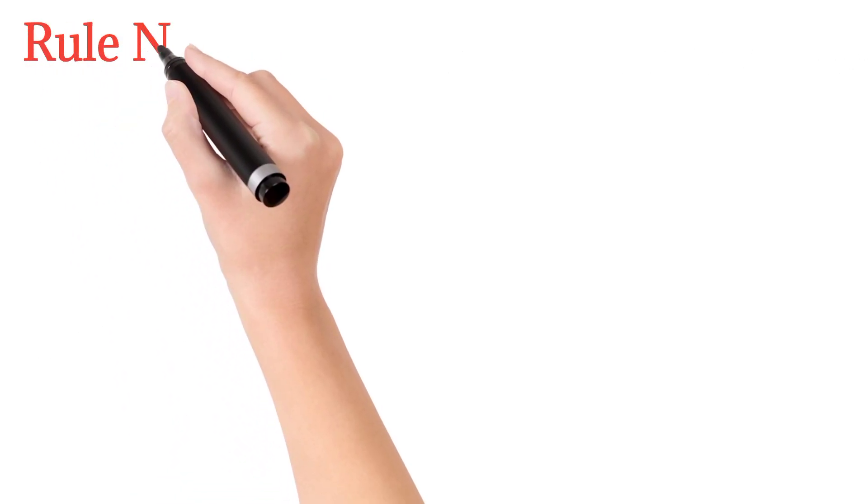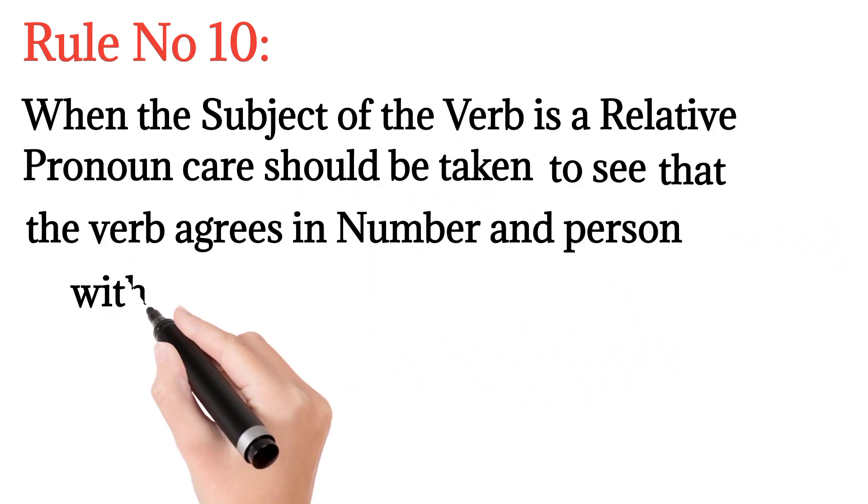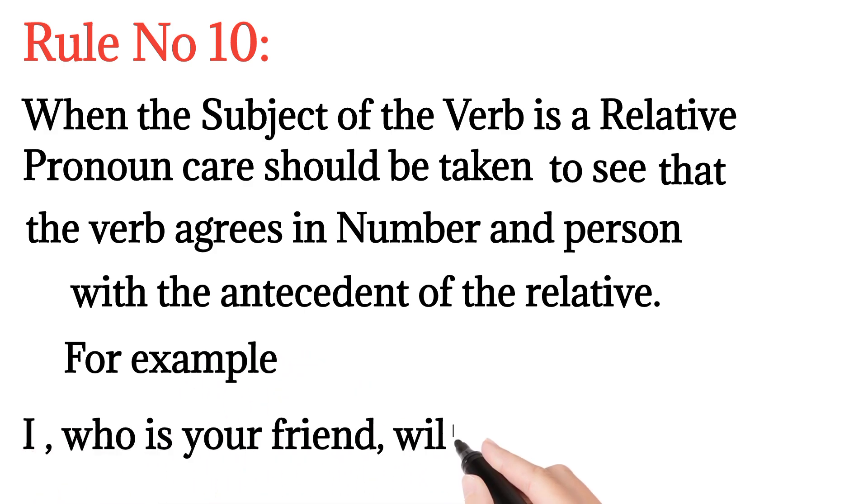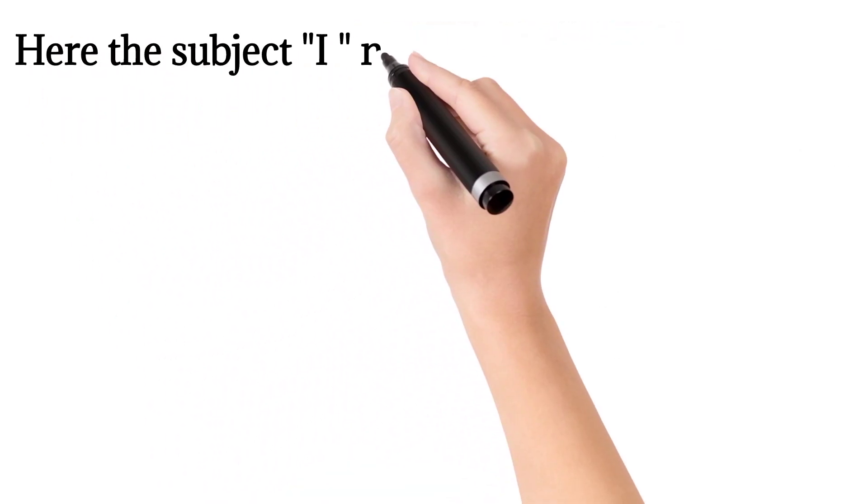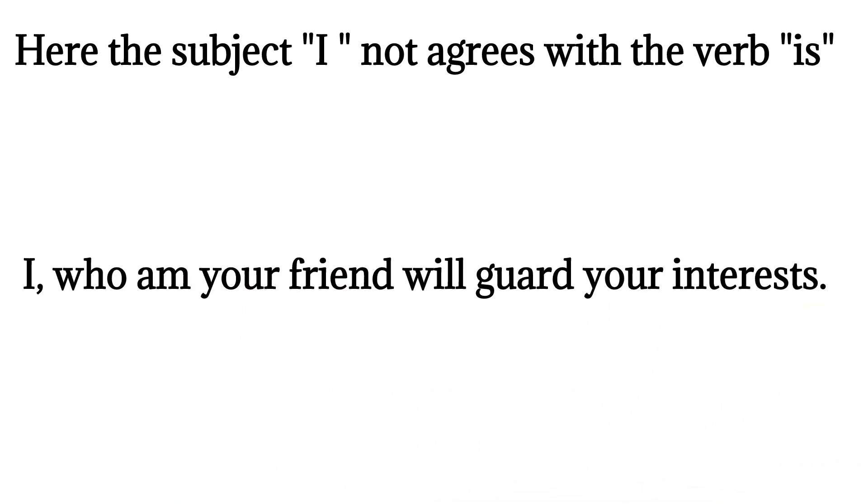Rule number ten: When the subject of the verb is a relative pronoun, care should be taken to see that the verb agrees in number and person with the antecedent of the relative. For example, 'I, who is your friend, will guard your interests' - here the subject 'I' does not agree with the verb 'is'. So the correct form of this sentence is 'I, who am your friend, will guard your interests'.